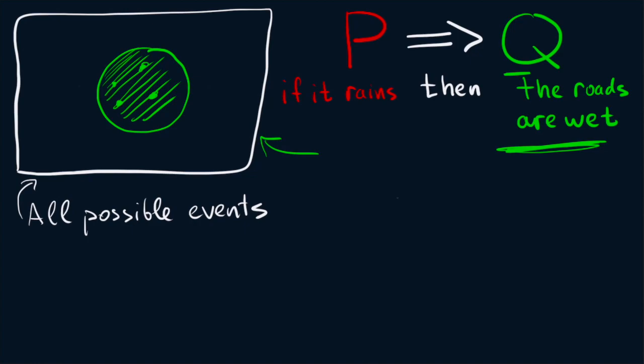And now, think about P. What does P look like on this picture? Well, because P implies Q, meaning that every time P happens, we know that Q happens, we of course understand that P can be represented as a circle inside the green circle.